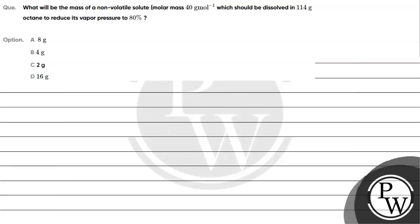Let's read this question. The question says: what will be the mass of a non-volatile solute with molar mass 40 gram per mole, which should be dissolved in 114 gram of octane to reduce its vapor pressure to 80%? Option A: 8 gram, Option B: 4 gram, Option C: 2 gram, Option D: 16 gram. The key concept for this question is relative lowering of vapor pressure.